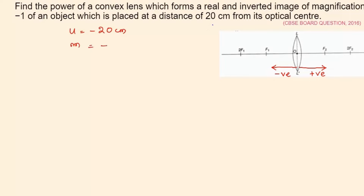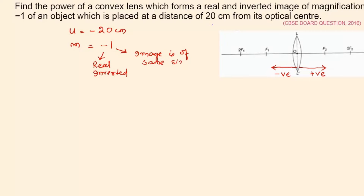Then we have magnification is minus one. The minus sign indicates that it's a real image, and real images are always inverted. The number one indicates how many times it is enlarged — here it is one, which means the image is of the same size as the object. If magnification is less than one the image is diminished, and if it is greater than one the image is enlarged.